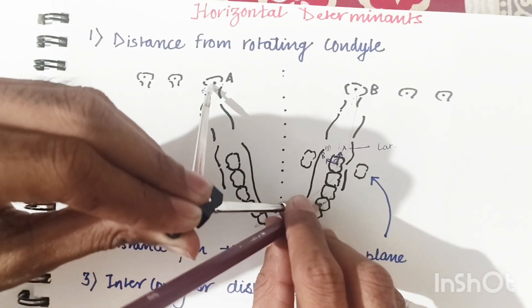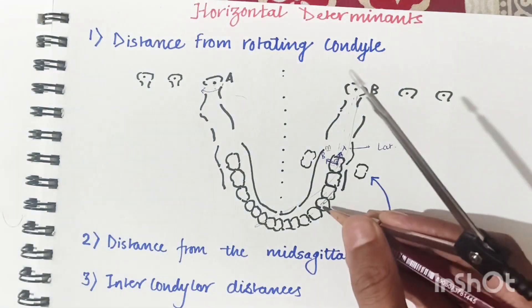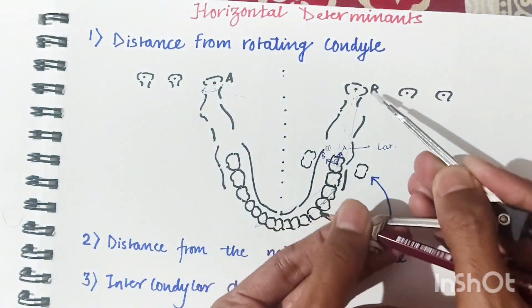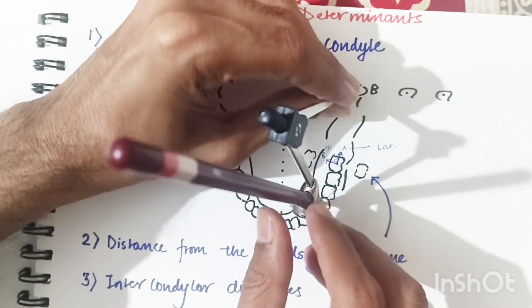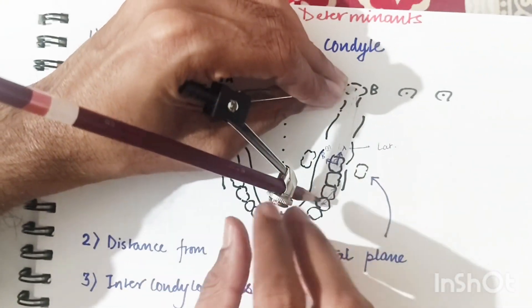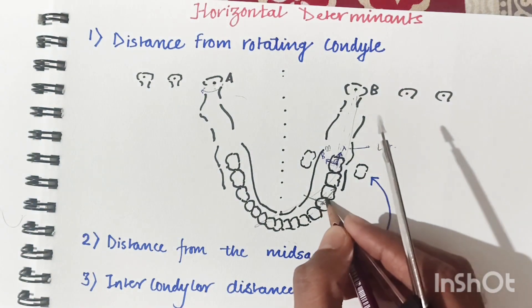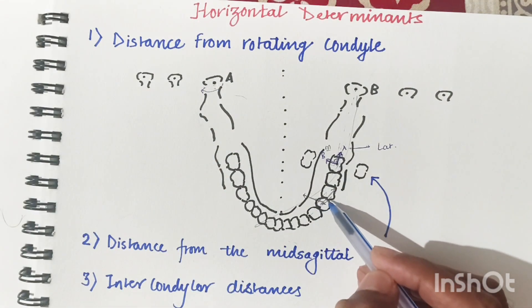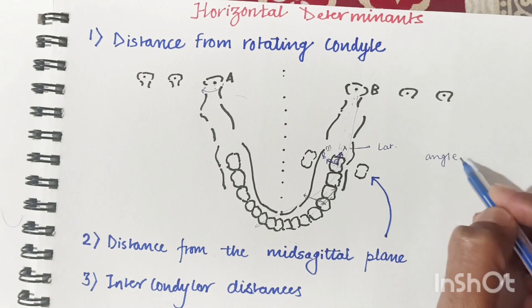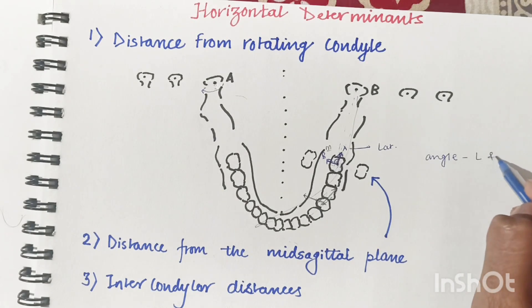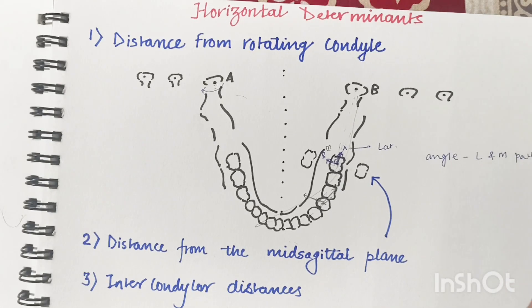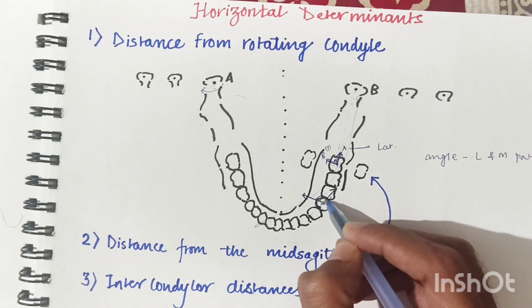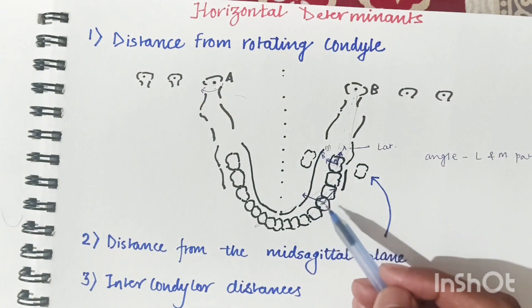As we move away from the rotating condyle, the angle between the lateral trusive and mediotrusive paths increases. This angle is lesser when close to the condyle and greater when farther away. So distance from the rotating condyle is directly proportional to the angle between mediotrusive and lateral trusive paths.